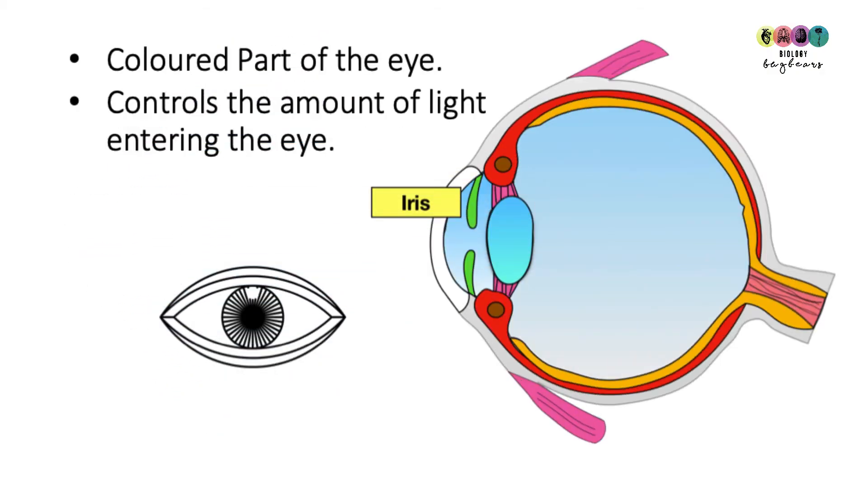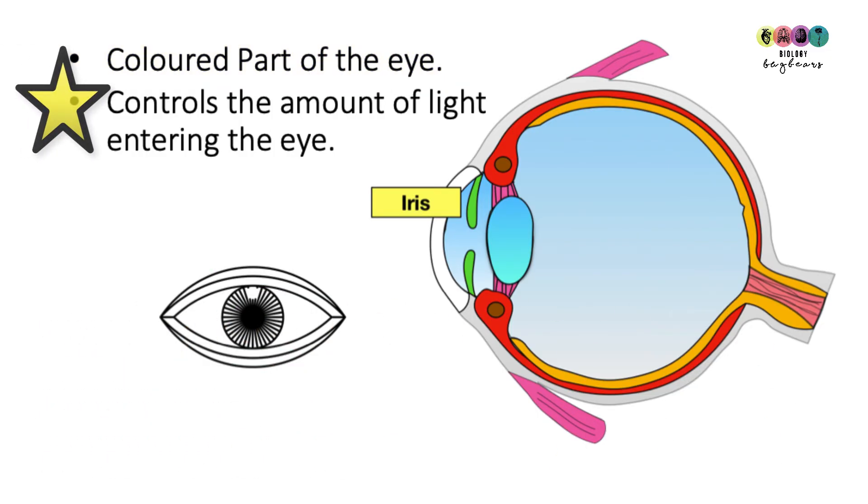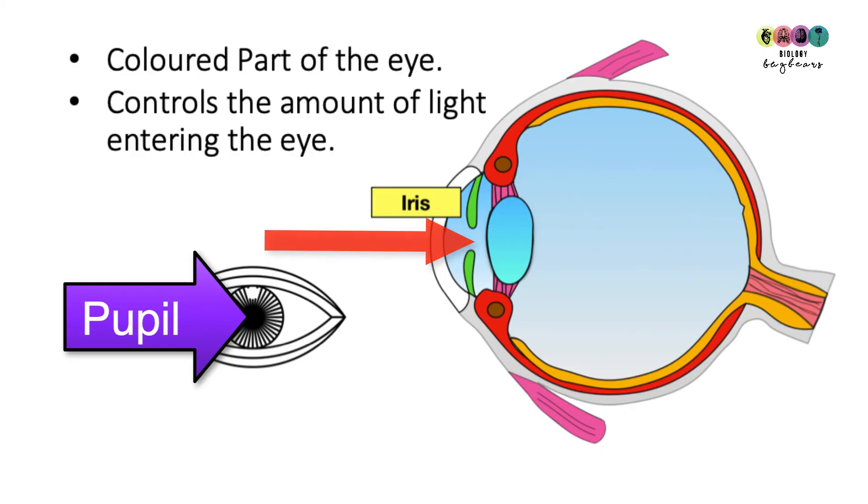The iris is the coloured part of the eye. It's the part we're most familiar with and it's coloured because it contains the pigment melanin. Remember we met that in the skin. It controls the amount of light that enters the eye. That's the function of the iris. At the centre of the iris is this hole known as the pupil. So it's through the pupil that light enters into the back of the eye.